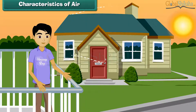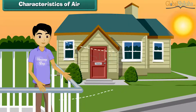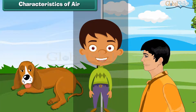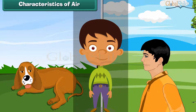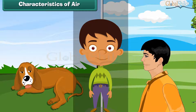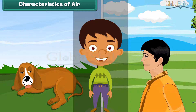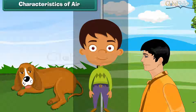Characteristics of air. Air is all around us. All living things breathe in and breathe out air continuously. But we cannot see it — we can only feel it. Air has no color, taste, or odor.